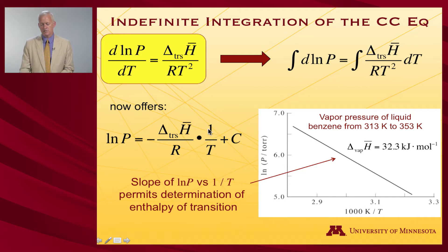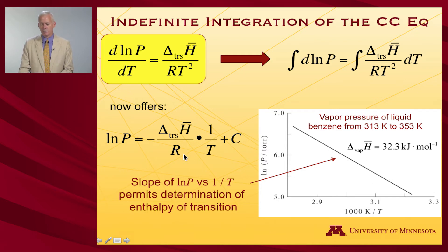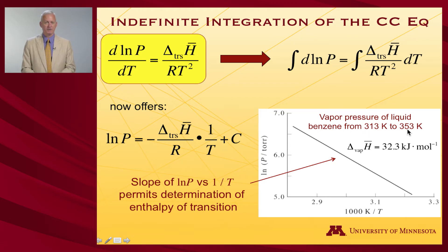You would vary the temperature using a manometer, observe how the vapor pressure changes, plot that set of vapor pressures against 1/T, and the slope of the line when multiplied by R gives you the transition enthalpy — a very convenient way to get at it. In the case of benzene, for instance, as I go from 313 Kelvin to 353 Kelvin, I would find that the heat of vaporization is 32.3 kilojoules per mole.